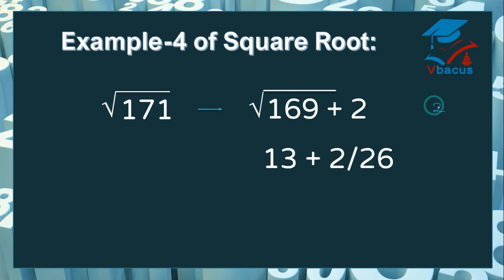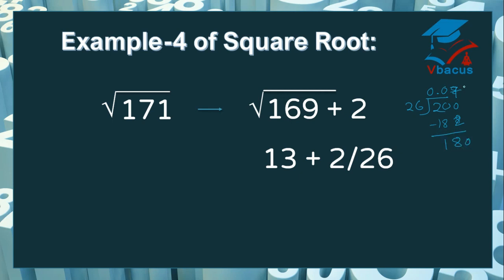Let us divide 2 by 26. You cannot divide, so insert decimal. Again you cannot divide, so insert 0. I think it will go 7 times. 7 sixes are 42, carry 4; 7 twos are 14 plus 4 is 18. Approximate — you can divide by 7. So 0.077. If you add 13 plus 0.077, the answer will become approximately 13.077. This is the square root of 171, a non-perfect square number.